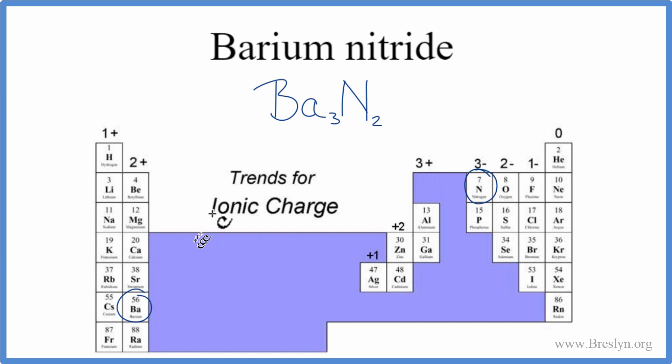So we said barium down here, that's a 2 plus, and nitrogen was a 3 minus ionic charge. So the barium atoms, all the charge on the barium atoms, should cancel out the charge on the nitrogen atoms. 3 times 2 plus, that's 6 plus, and 2 times 3 minus, that's 6 minus. So we add 6 plus and 6 minus, that equals 0.